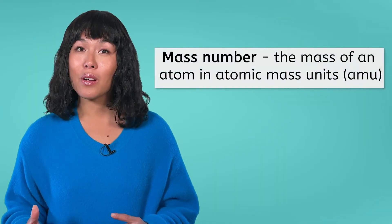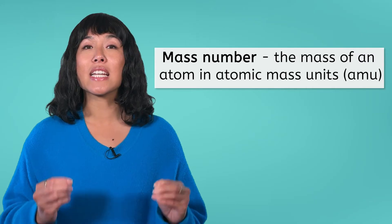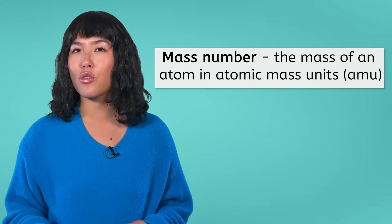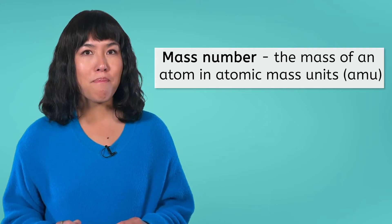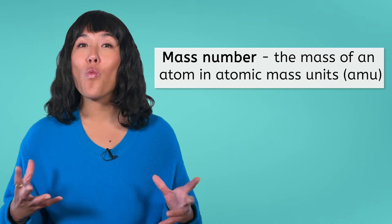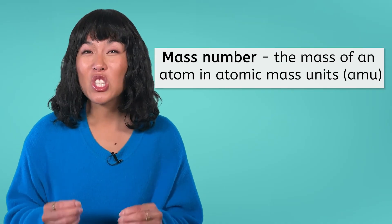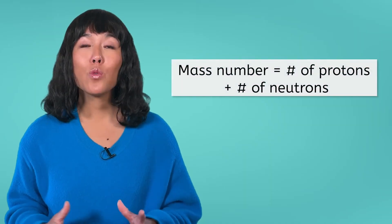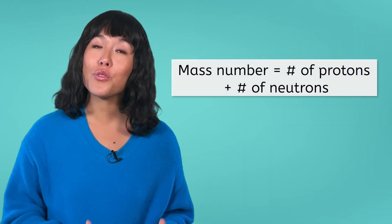Another important piece of information about an atom is not found on the periodic table: this is the atom's mass number. The mass number is the mass of a single atom measured in atomic mass units. The mass of a proton and a neutron are each one AMU, while an electron is so small that its mass is not taken into account. The mass number of an atom is equal to the number of protons plus the number of neutrons in the atom.